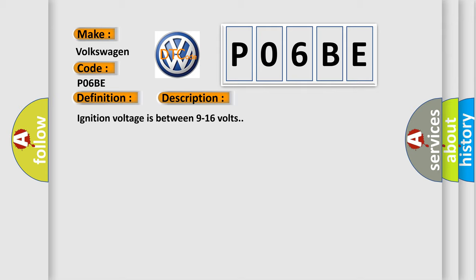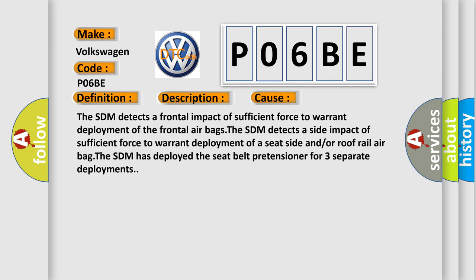Ignition voltage is between 9 to 16 volts. This diagnostic error occurs most often in these cases: The SDM detects a frontal impact of sufficient force to warrant deployment of the frontal airbags. The SDM detects a side impact of sufficient force to warrant deployment of a seat side and/or roof rail airbag. The SDM has deployed the seat belt pretensioner for three separate deployments. The airbag reset website aims to provide information in 52 languages.